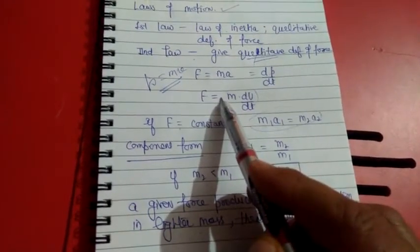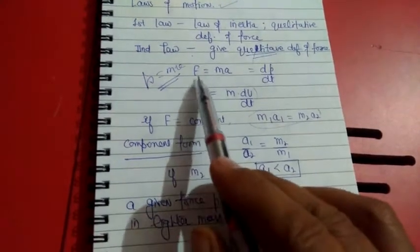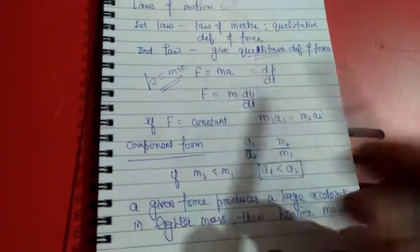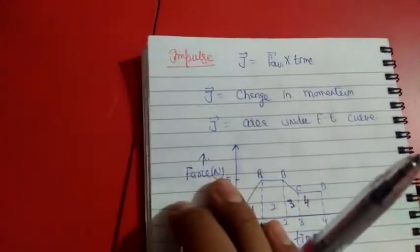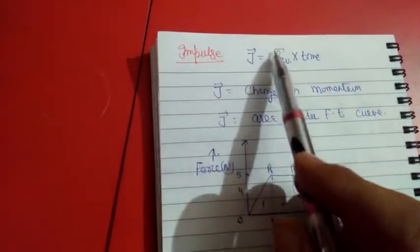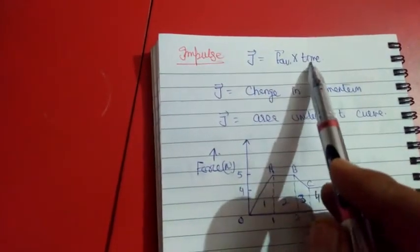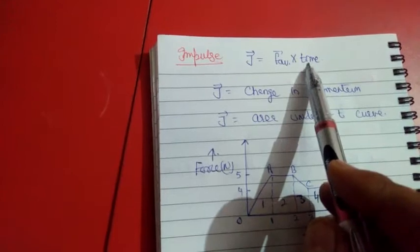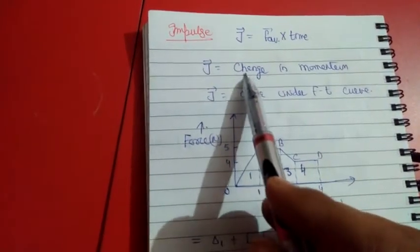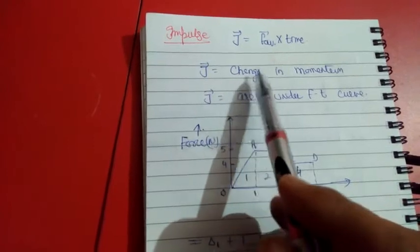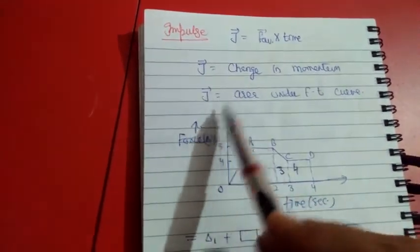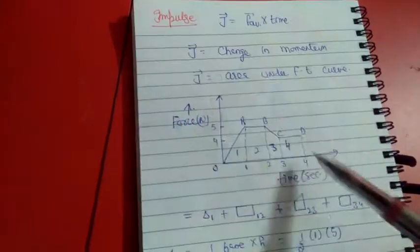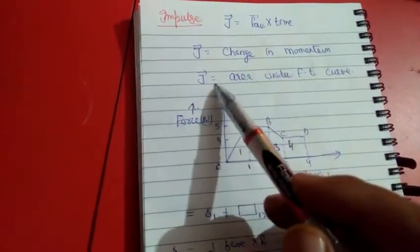We can also write force in terms of components: Fx, Fy, and Fz, with mass constant giving accelerations Ax, Ay, and Az. Impulse is the average force acting on the body for a very short interval of time — average force multiplied by time. According to the impulse-momentum theorem, the impulse acting on the body equals the change in momentum. If we plot a graph between force and time, the area under the graph always gives the impulse.